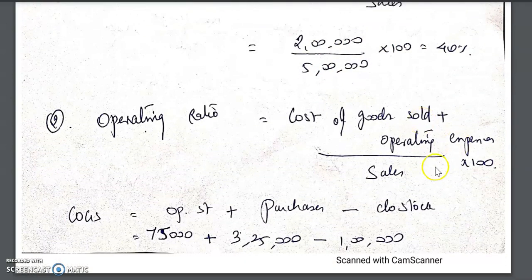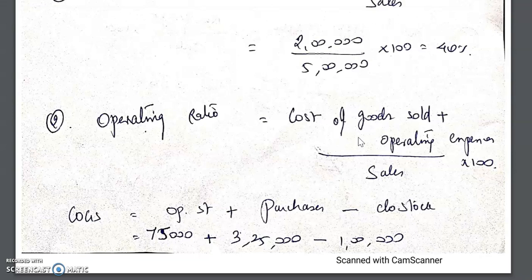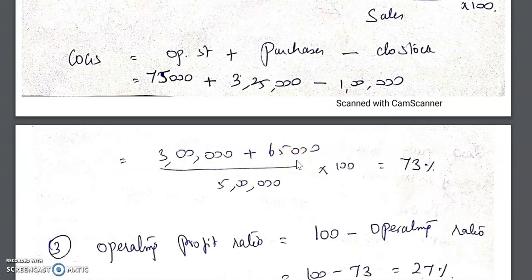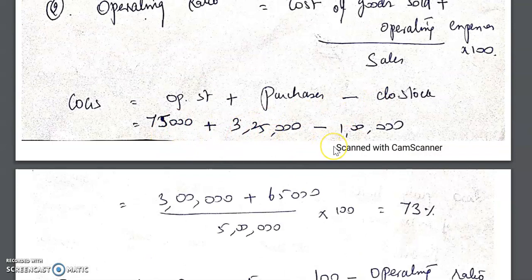Operating ratio formula: (cost of goods sold + operating expenses) divided by sales into 100. There are two operating expenses — administrative expenses and selling and distribution expenses. Cost of goods sold = opening stock plus purchases minus closing stock = 75,000 plus 3,25,000 minus 1,00,000 = 3,00,000. Operating expenses = 65,000. So operating ratio = (3,00,000 + 65,000) divided by 5,00,000 into 100 = 73 percent.